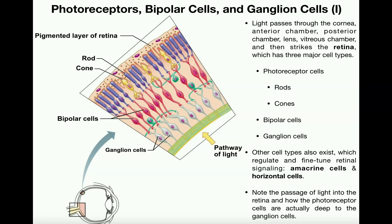Everything in this is going to be based on functions in the retina, which is the deepest layer of the eye. Remember that we have a fibrous tunic, which consists of the sclera and cornea. Then we have the vascular tunic, which contains the choroid, and then the neural tunic, which has a lot of neurons — and that really is just the retina.